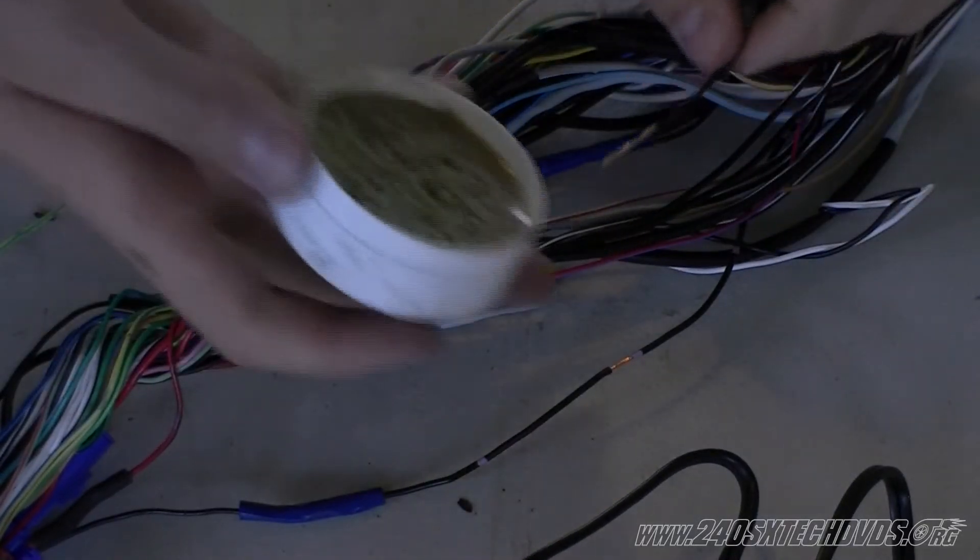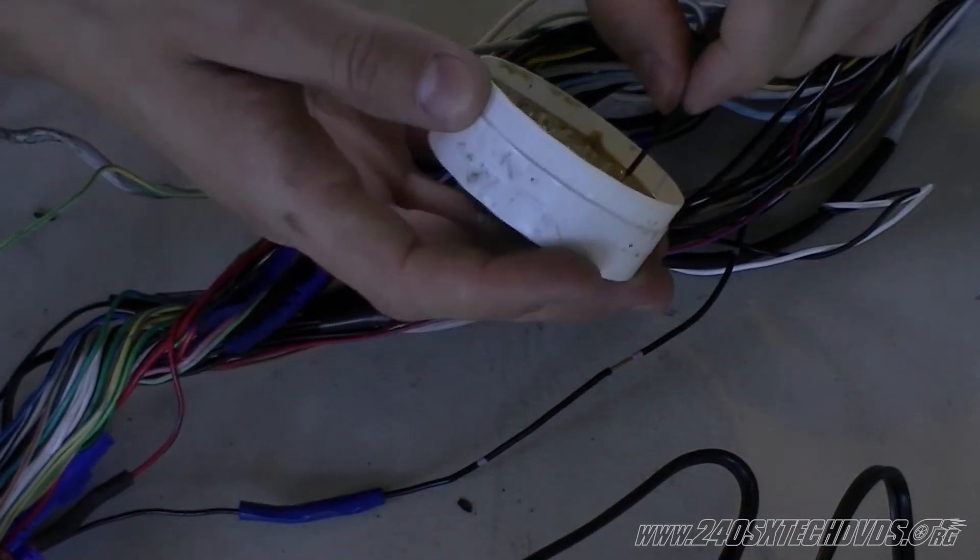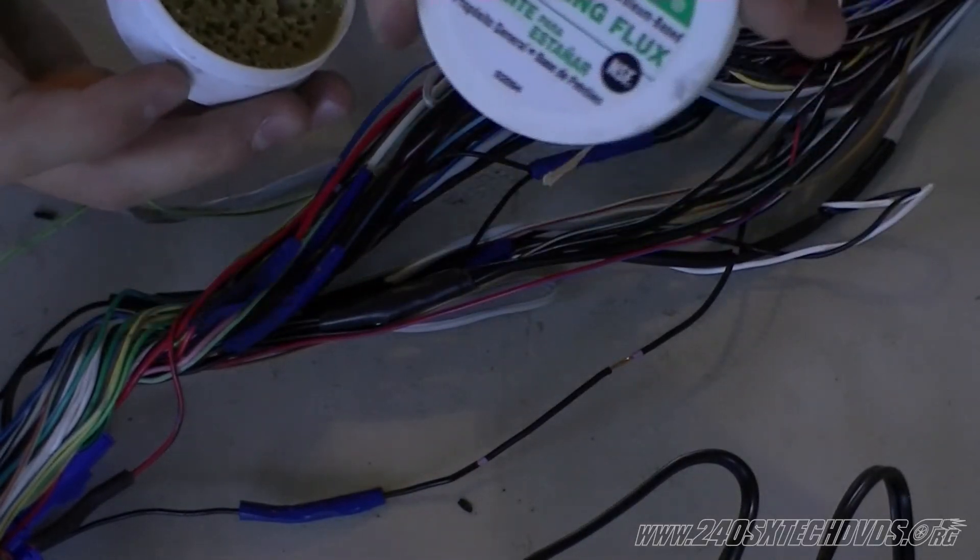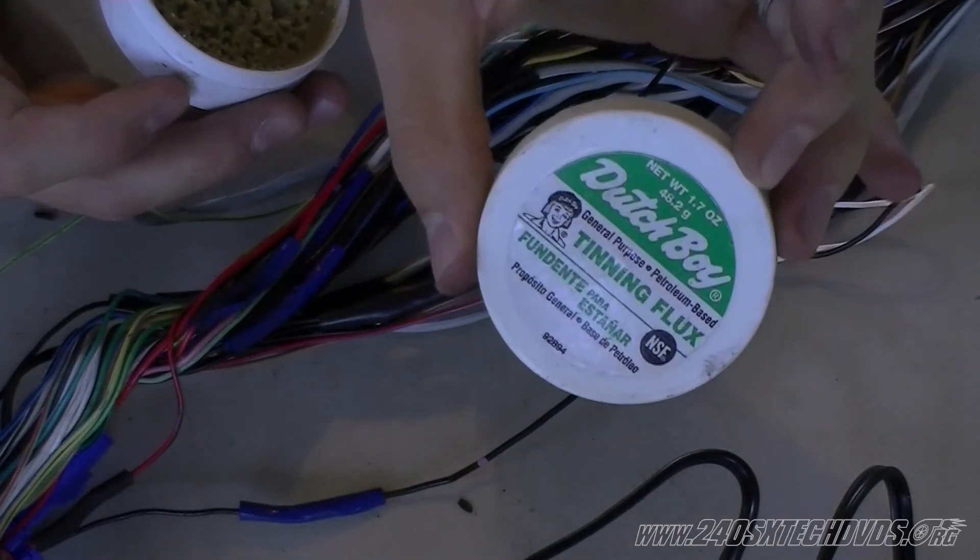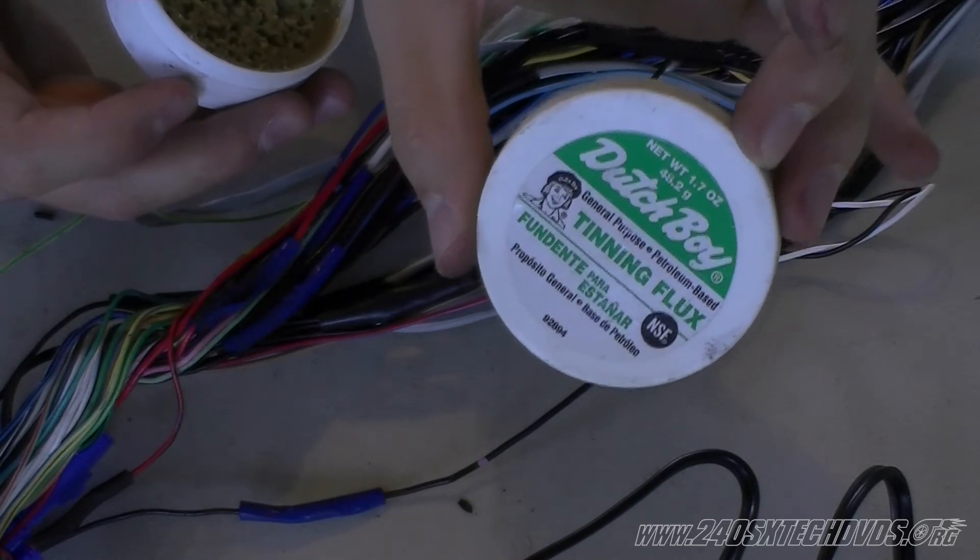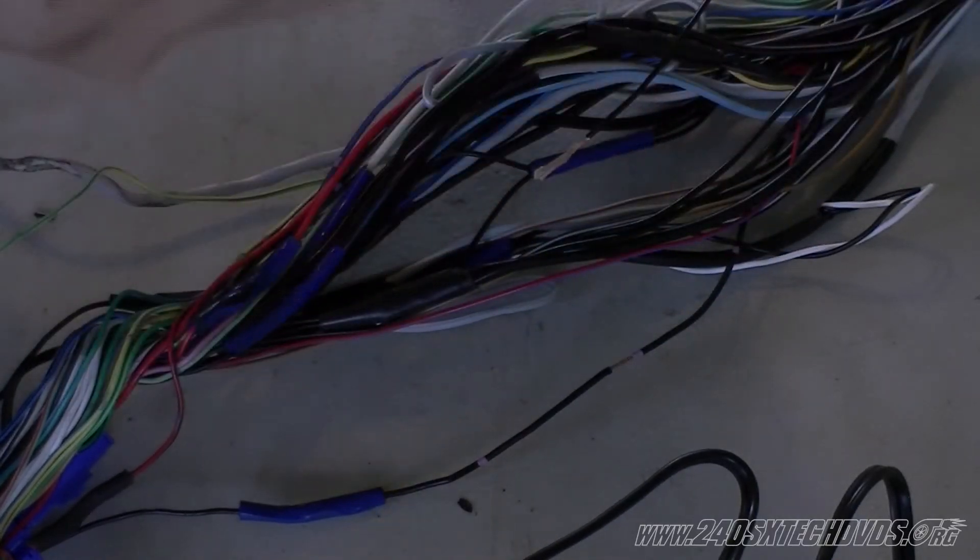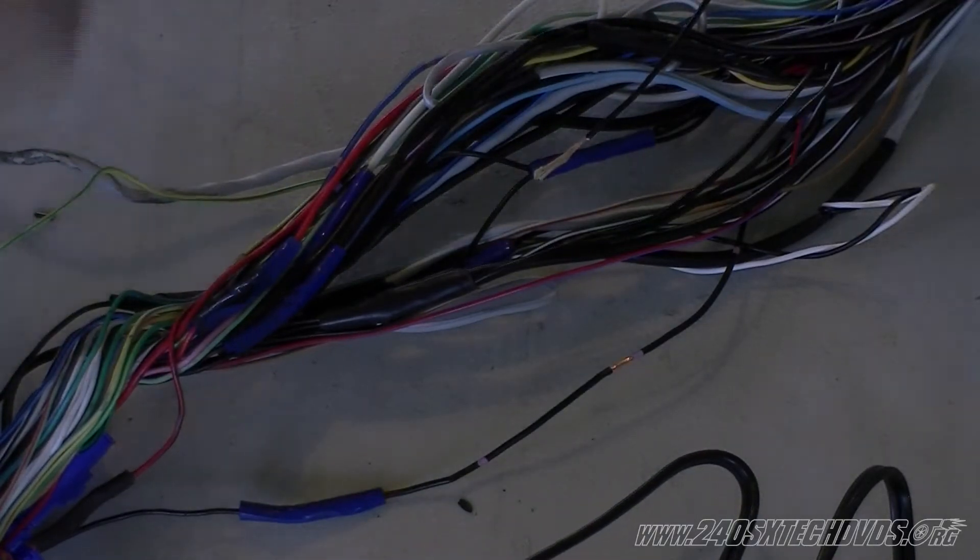After your wire is stripped, you're going to dip it in some flux. Basically what I'm using is Dutch Boy Tinning Flux. I got it from Lowe's in the plumbing section. You definitely want to use this stuff. It helps you get a better solder on your wire.